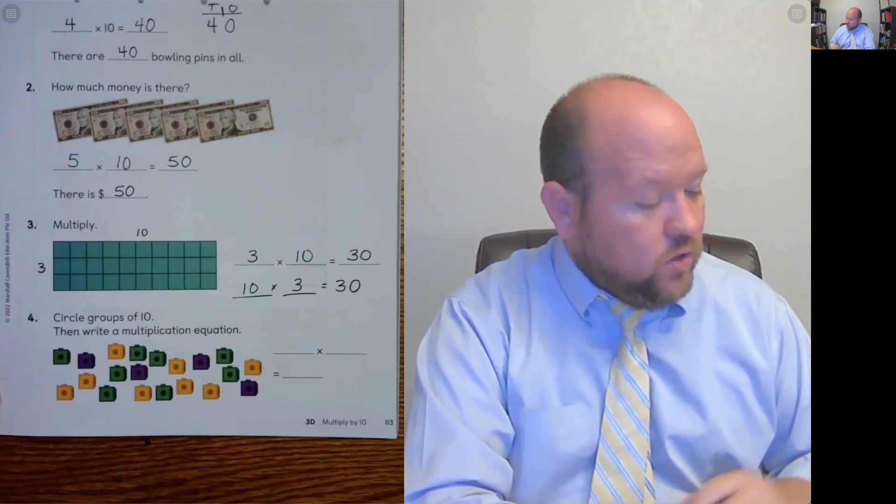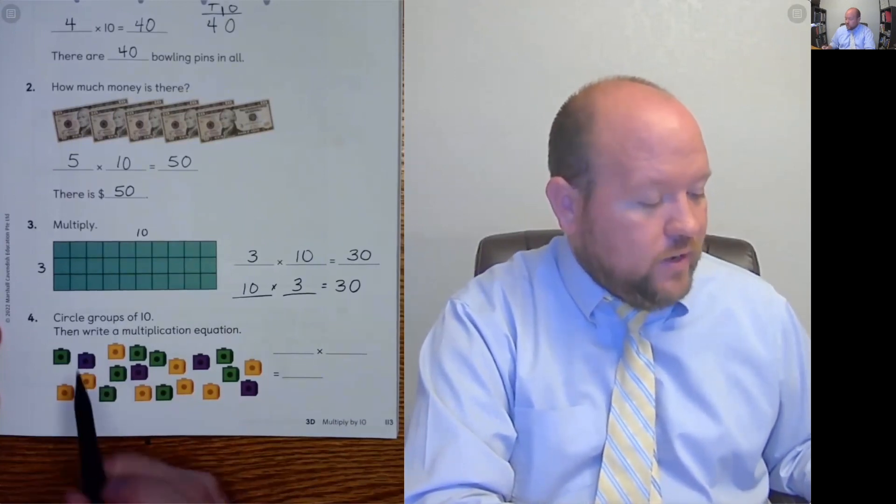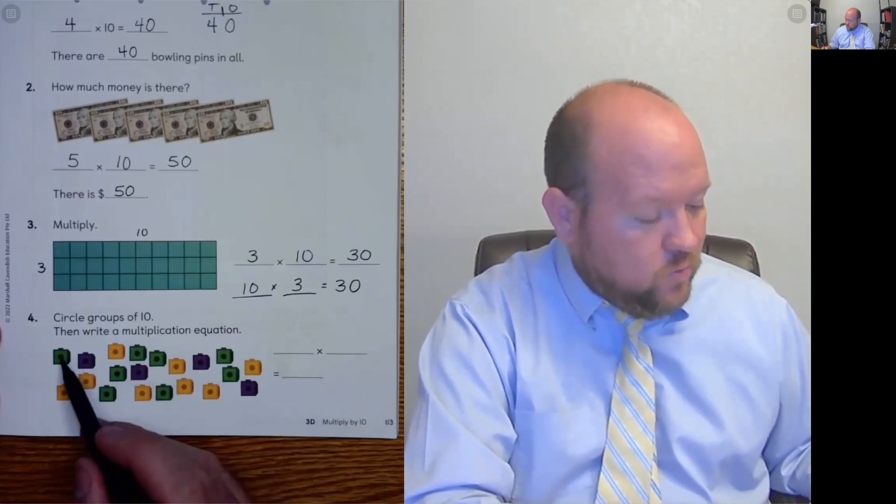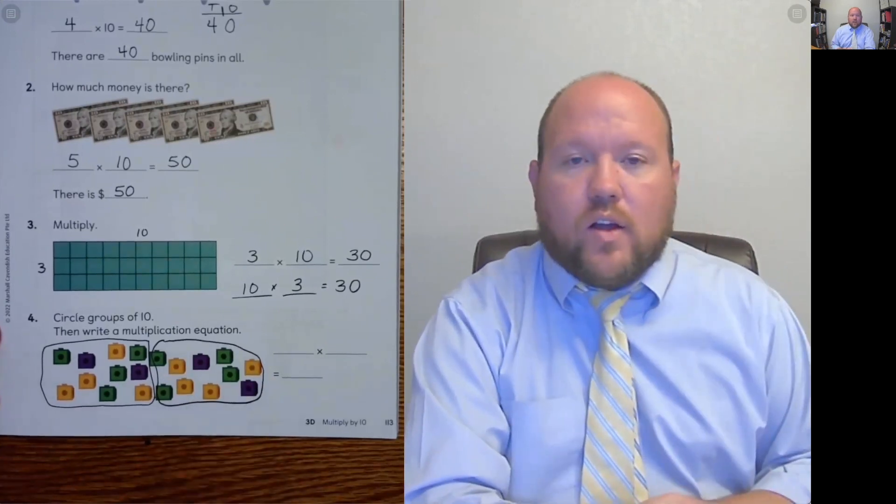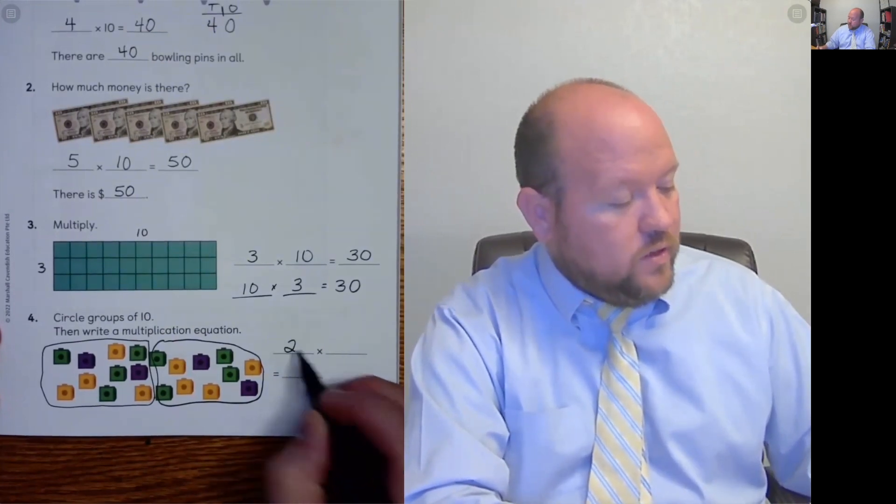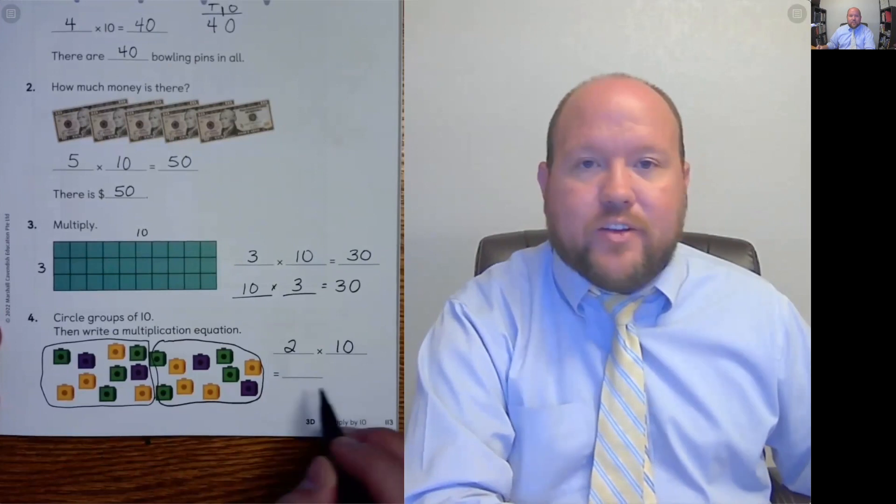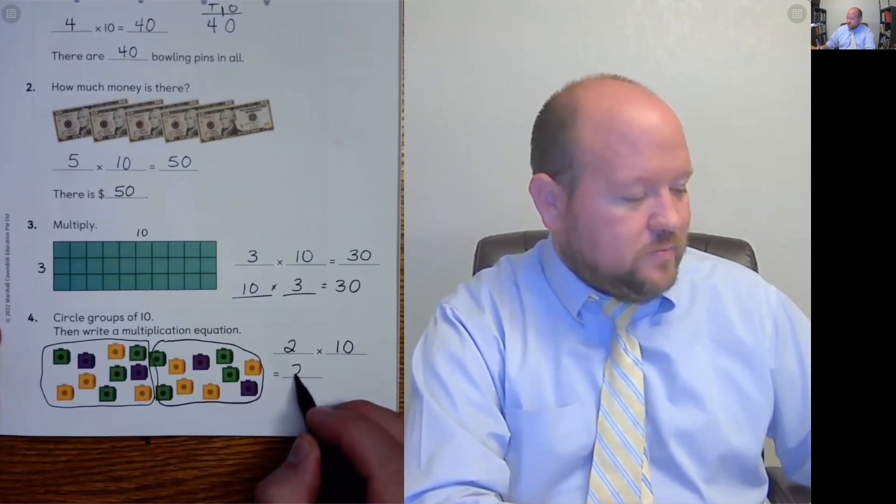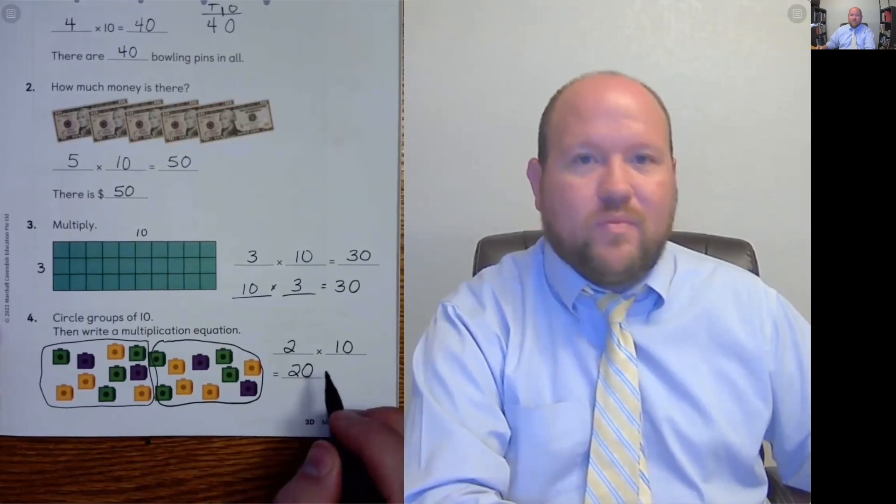Next, circle groups of 10. So if you were doing this on another piece of paper, you would just have to count them, circle groups of 10, and then write any multiplication equation. So 1, 2, 3, 4, 5, 6, 7, 8, 9, 10. I'm going to draw a line here. I'm going to connect those. 1, 2, 3, 4, 5, 6, 7, 8, 9, 10. So now connect those. So how would I write this? Well, how many groups do I have? I've circled 10. How many groups do I have? I have 2 groups, 10 in each group. 2 times 10 is 20.